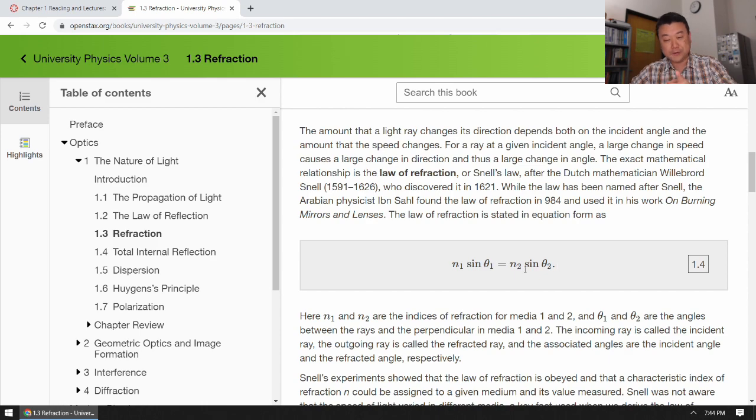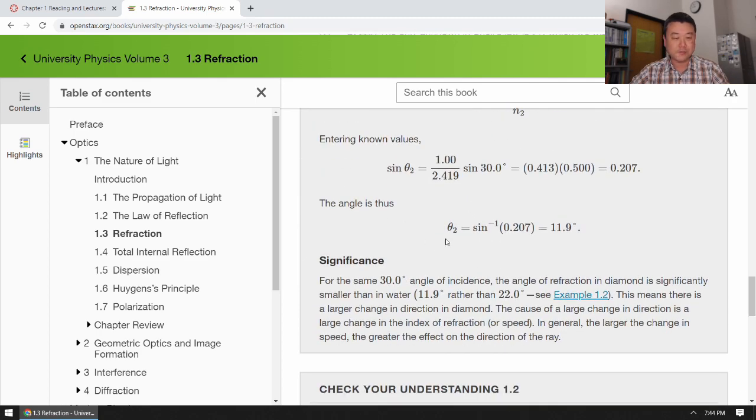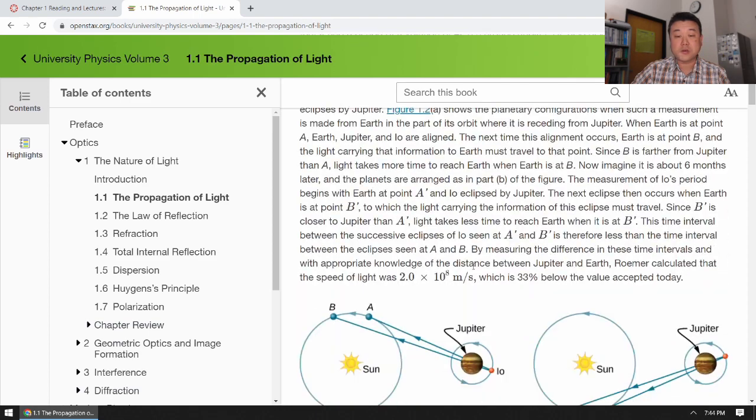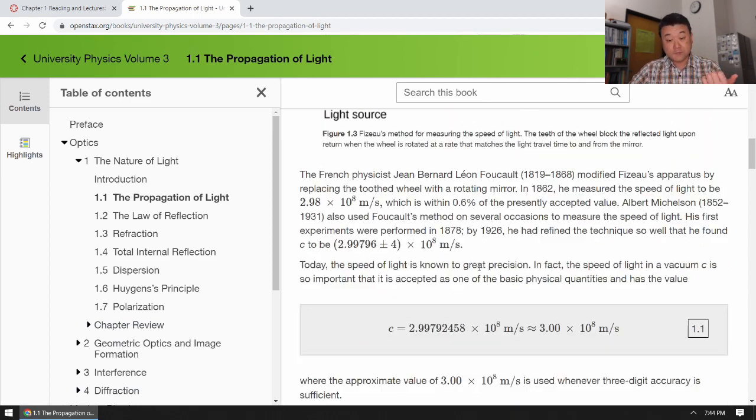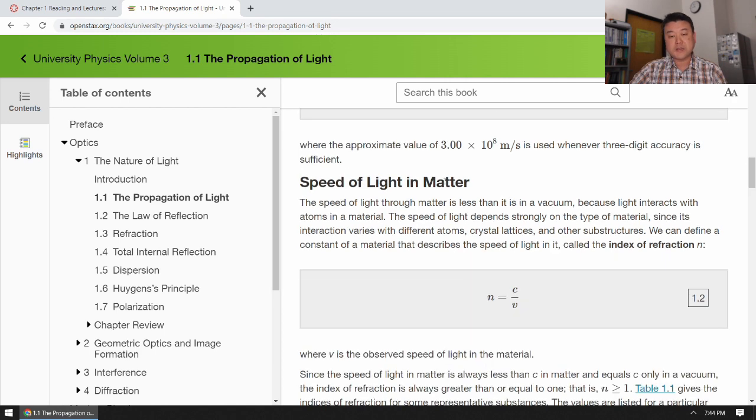And if you're looking for index of refraction, you won't find the table here, you will find the table in section 1.1, where we are talking about speed of light, both in vacuum. This is the speed of light in vacuum and speed of light in matter.